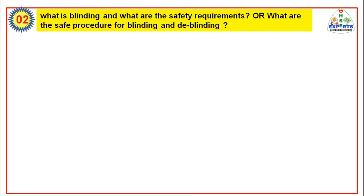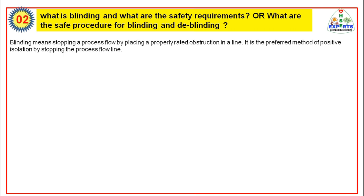Question 2: What is blinding and what are the safety requirements? What are the safe procedures for blinding and de-blinding? This question is also very important in oil and gas shutdowns. Blinding means stopping a process flow by placing a properly rated obstruction in a line. It is the preferred method of positive isolation by stopping the process flow line. As a safety check, do the following before starting blinding.